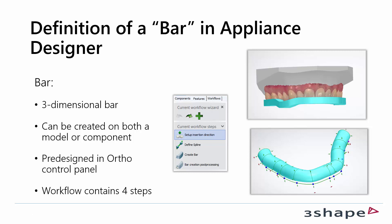Just a small definition of a bar in Appliance Designer. A bar is a three-dimensional bar. It can be created both on a model set or another component in Appliance Designer. The bars are pre-designed in Author Control Panel where you can go in and make modifications to them.